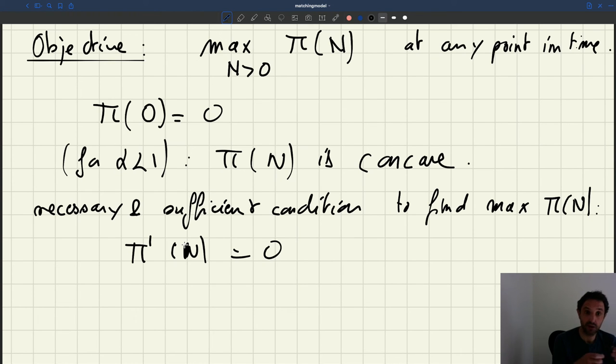And in addition, you know that maximum would be unique, so you found a global maximum to your function. So we are trying to find the point where the derivative of the profit function is zero.